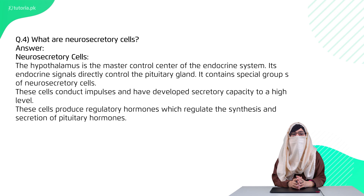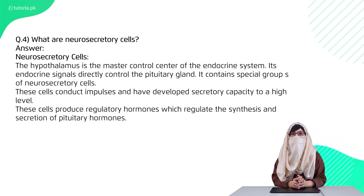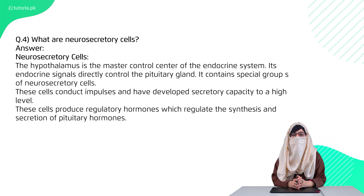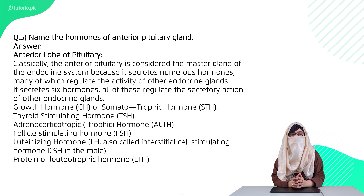Question four: what are neurosecretory cells? These are the neurons which are specialized for secreting hormones and neurotransmitters, so we call them neurosecretory cells. Their classic example is the hypothalamus.